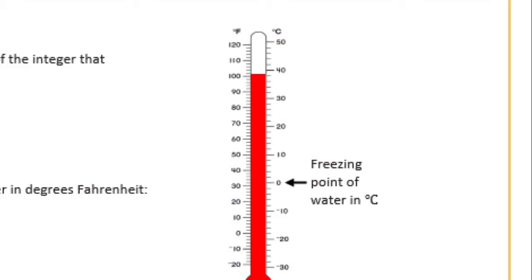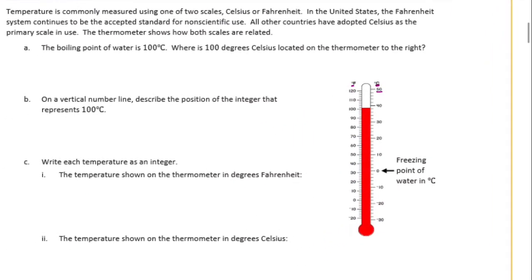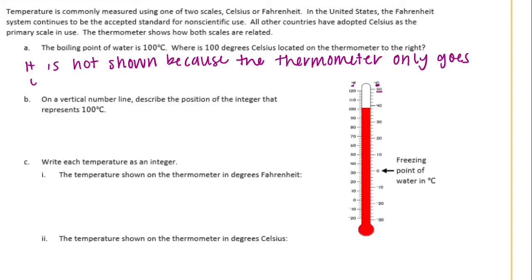So this side is Celsius, this side is Fahrenheit. So this only goes up to 50, so I don't even see 100 degrees Celsius on the thermometer. So we can say it's not shown because the thermometer only goes up to 50 degrees Celsius.